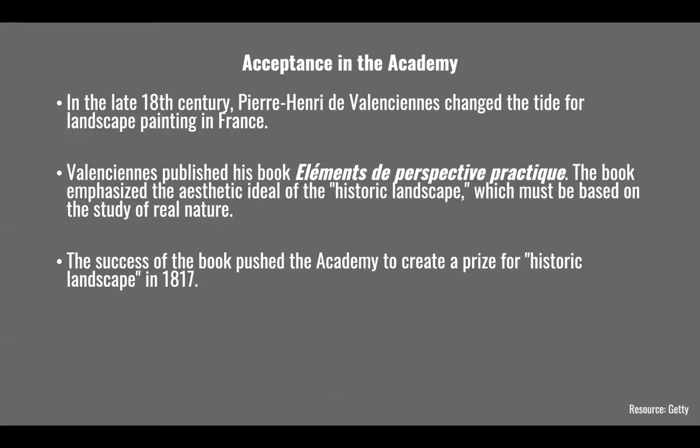The landscape was not really accepted in the academy up to this point. In the late 18th century this changed with the publishing of a book that emphasized the aesthetic ideal for the historic landscape — which must be based on the study of real nature. The success of the book pushed the academy to create the prize for historic landscape in 1817. That landscape, given how many landscapes we have today, was not taken seriously until 1817 is pretty significant.